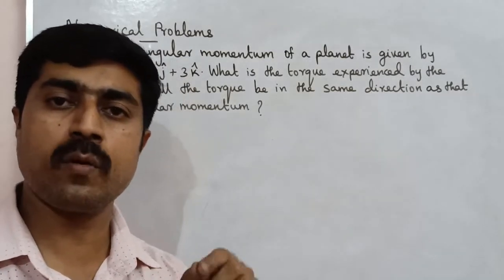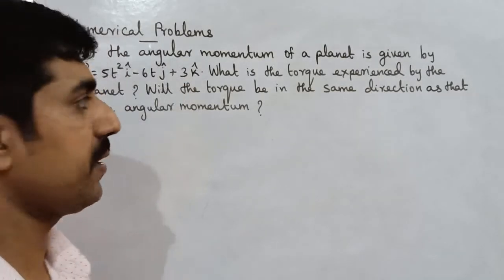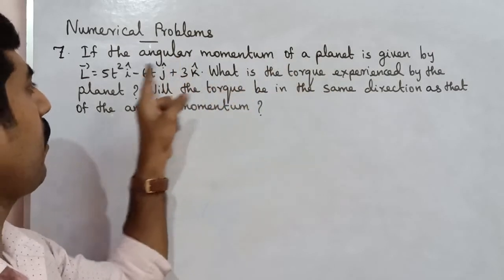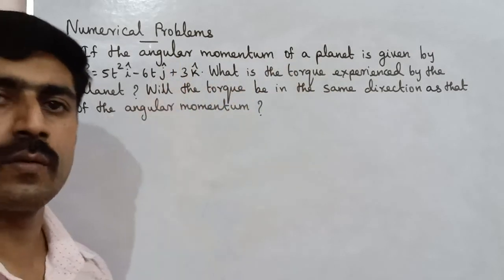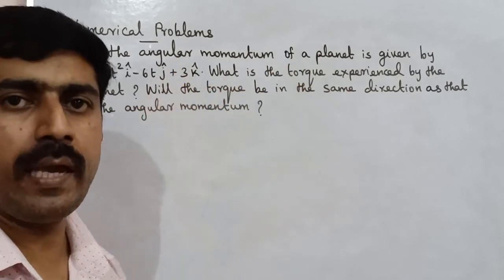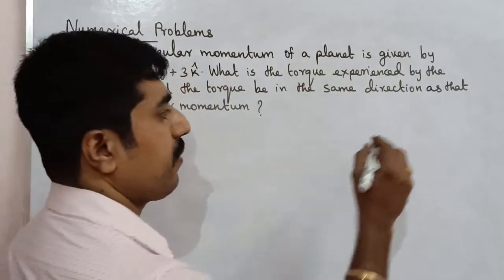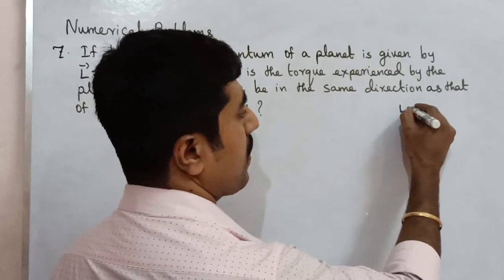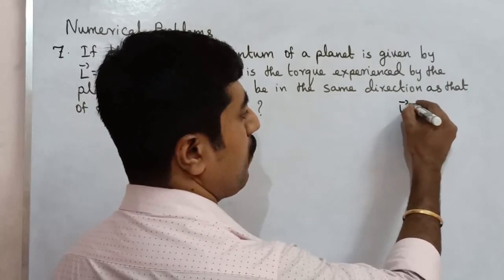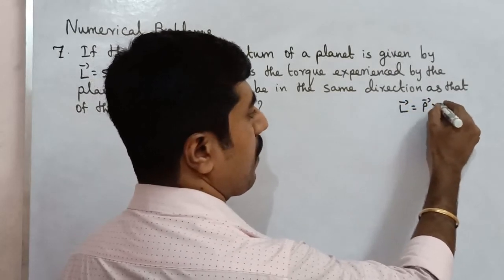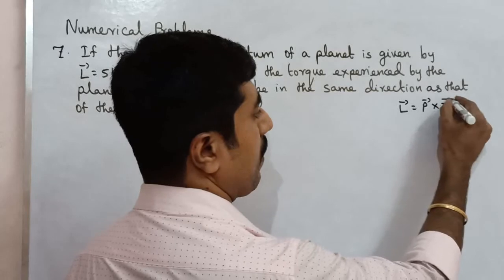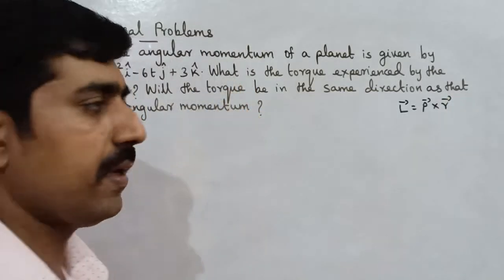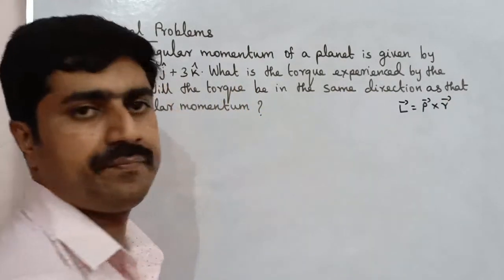What is the torque of the angular momentum? The angular momentum formula is L-vector equal to P-vector cross R-vector, where P is the linear momentum.